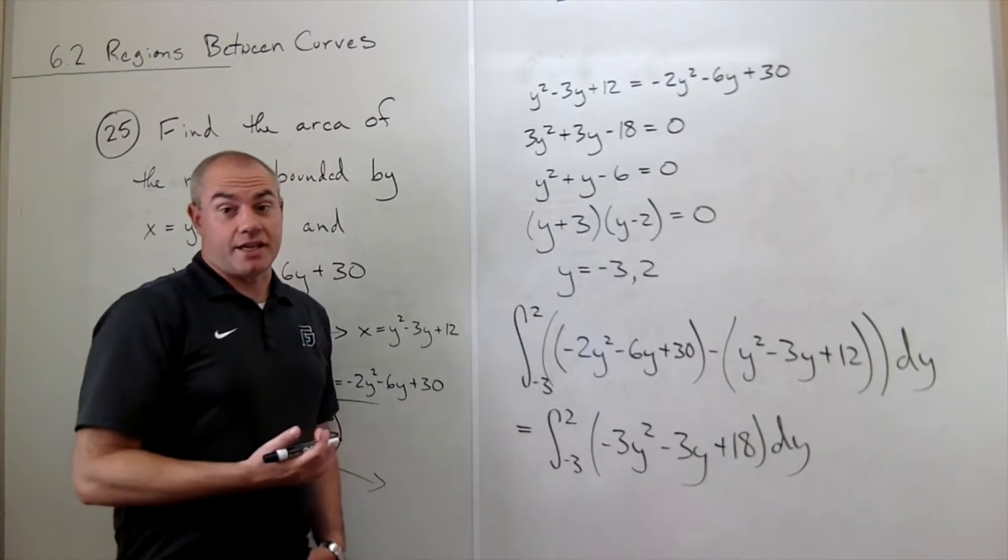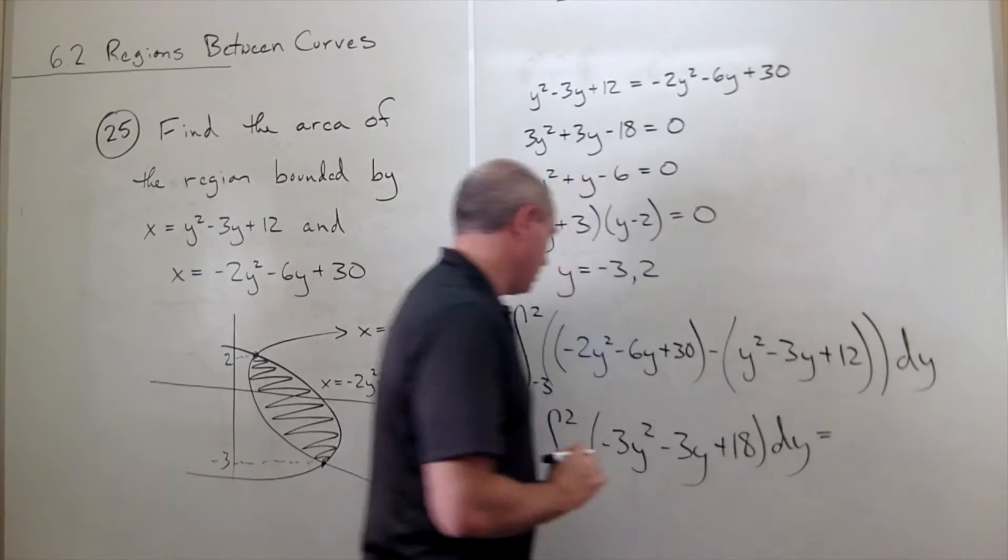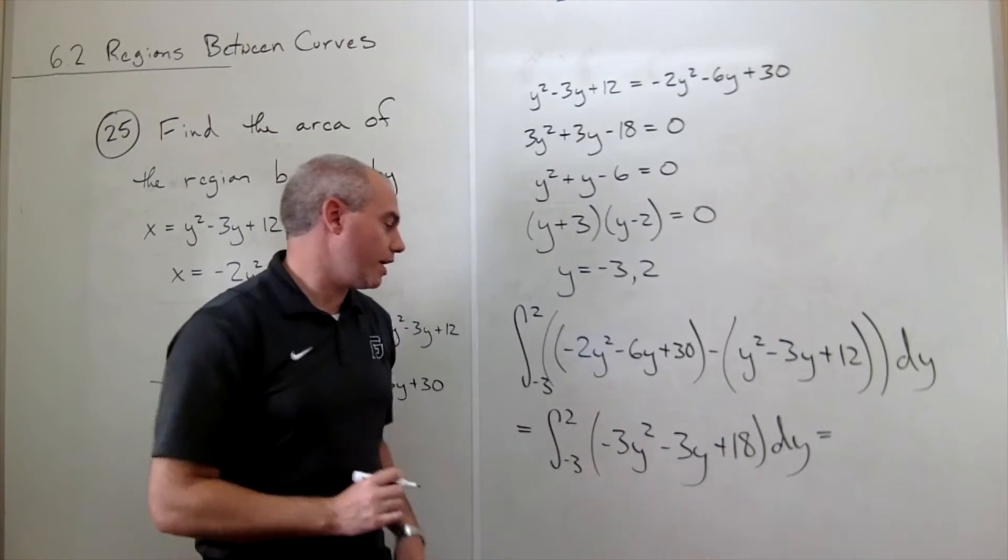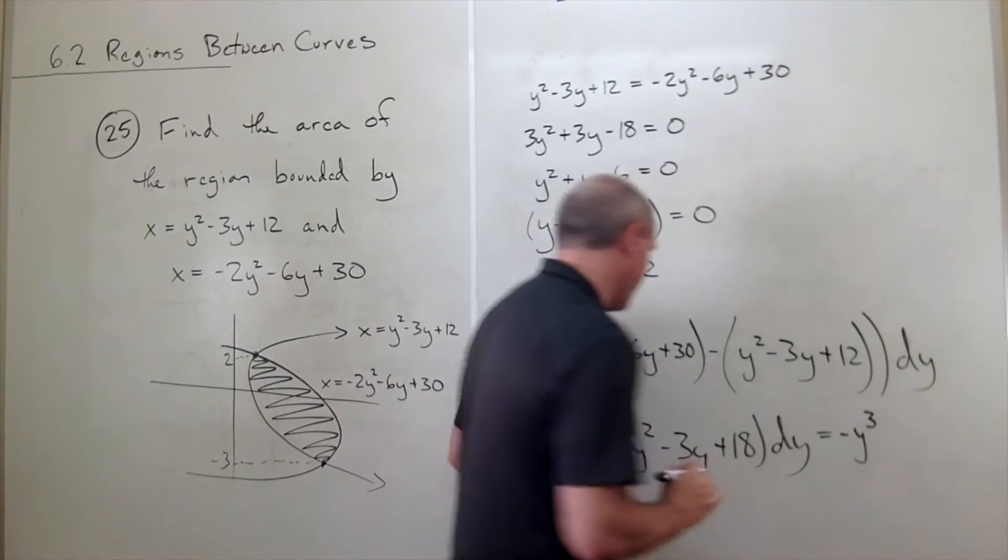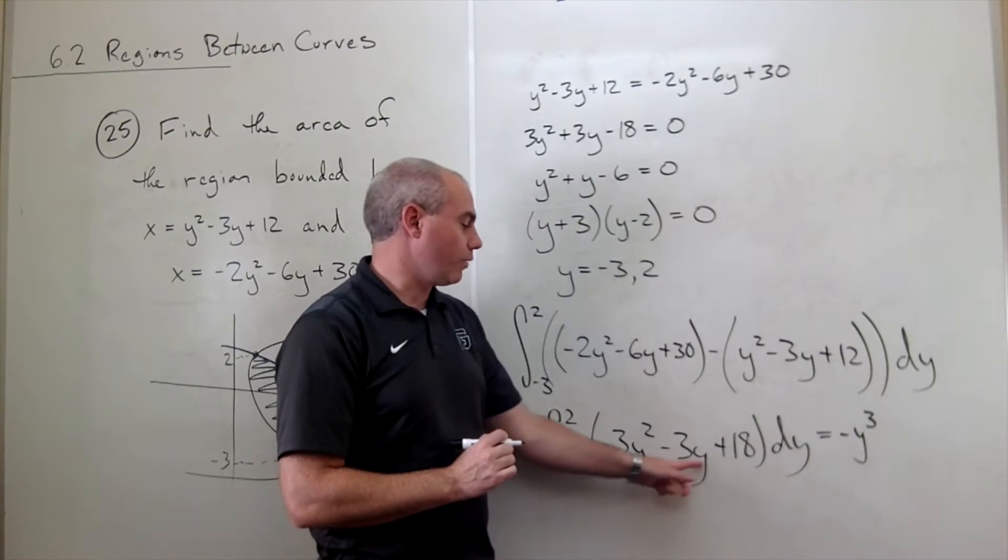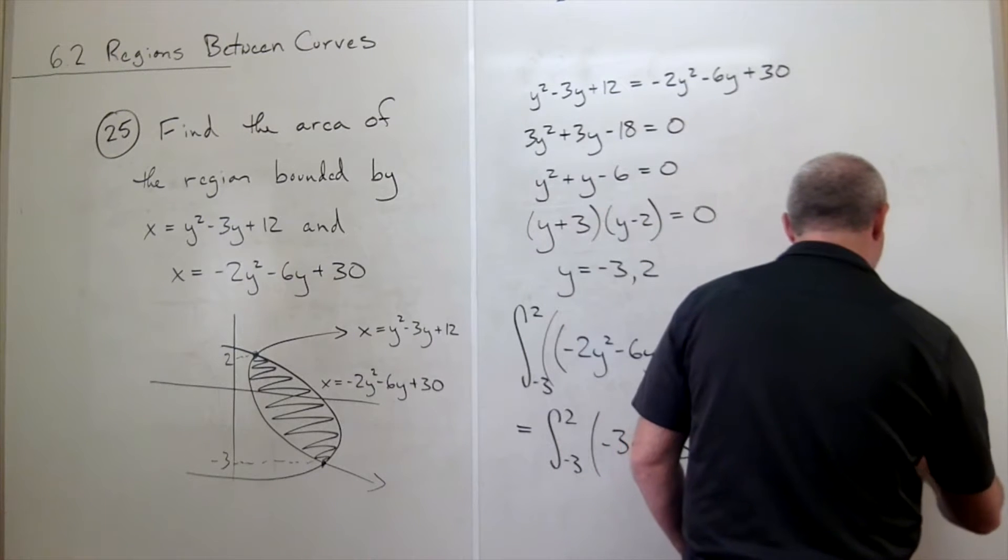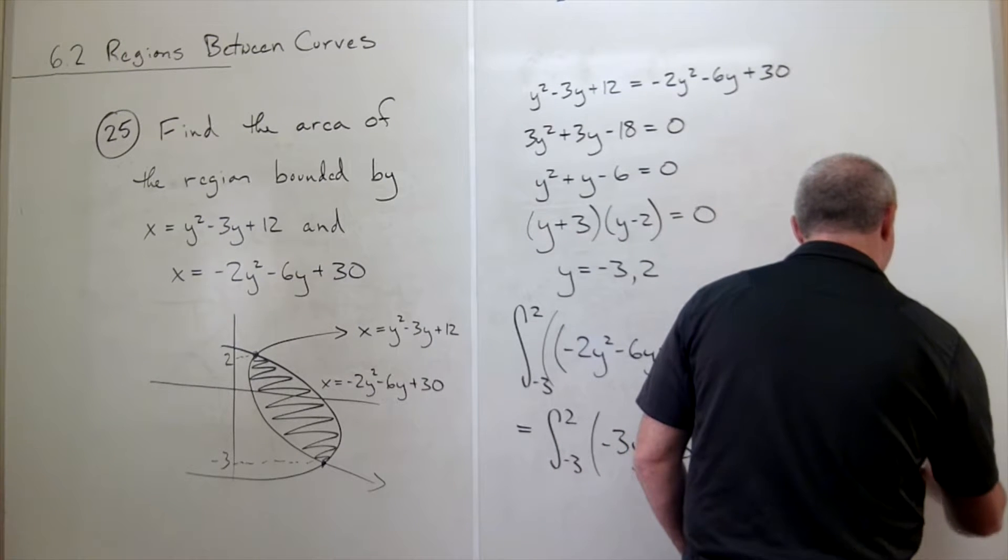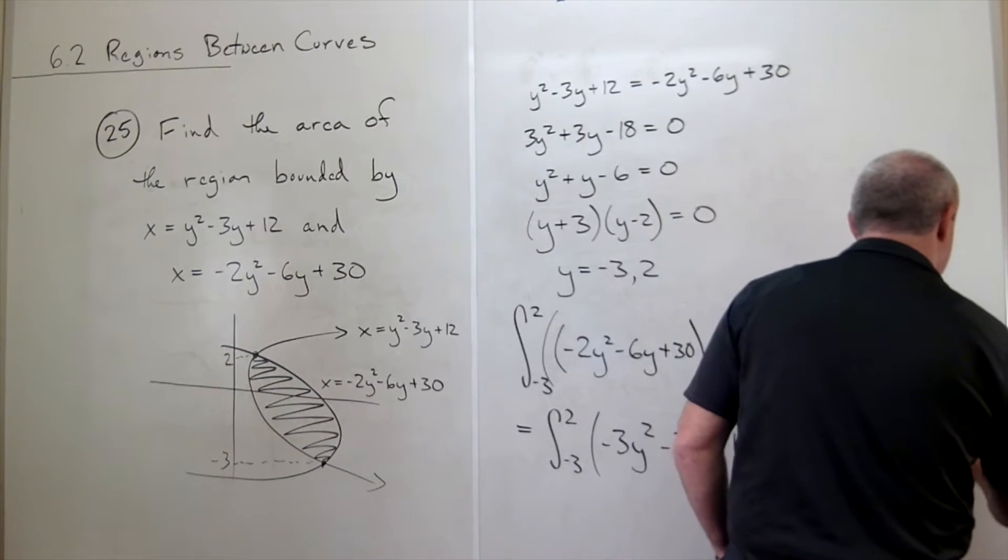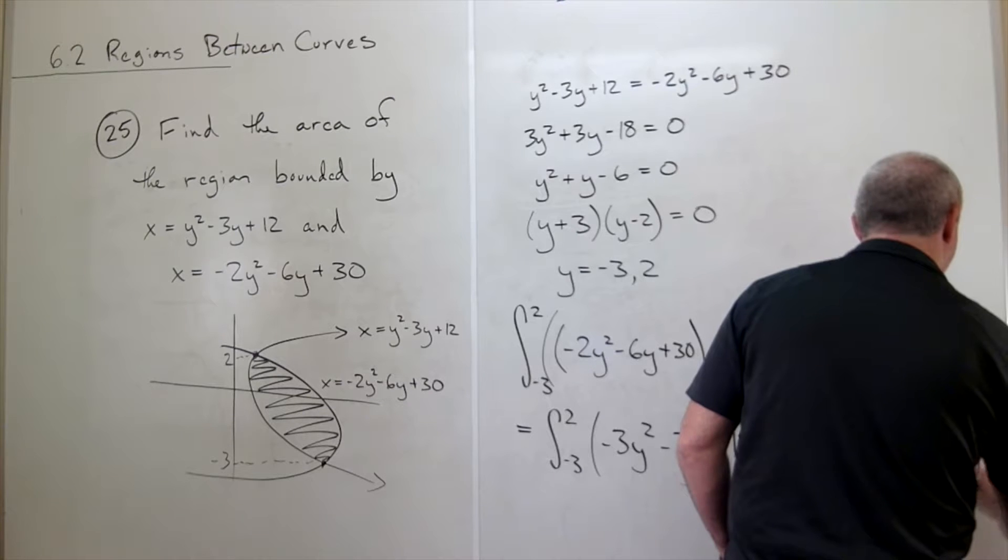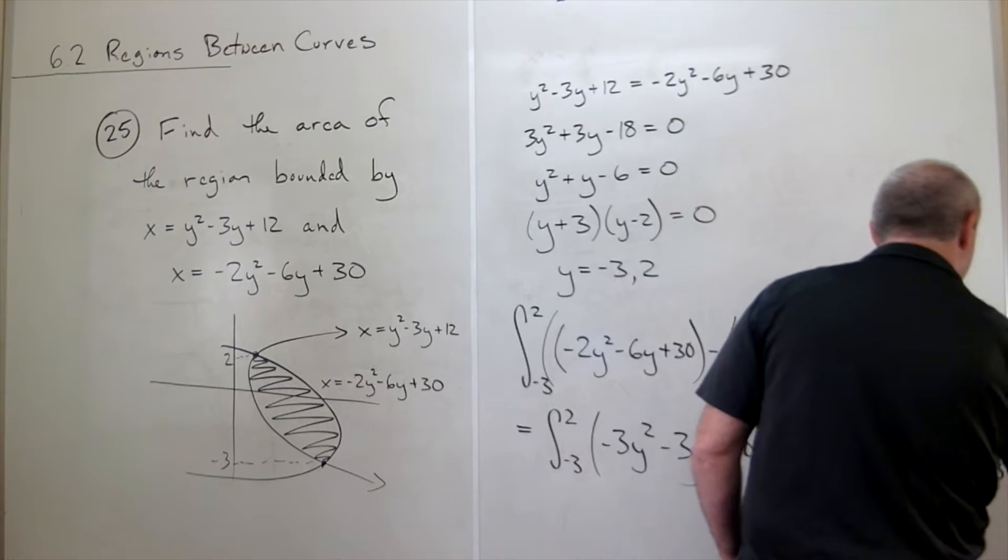Now let's take an antiderivative. Antiderivative of negative 3y squared would be minus y cubed. Antiderivative of negative 3y would be minus 3 over 2y squared. And finally, antiderivative of 18 is plus 18y, evaluated from minus 3 to 2.